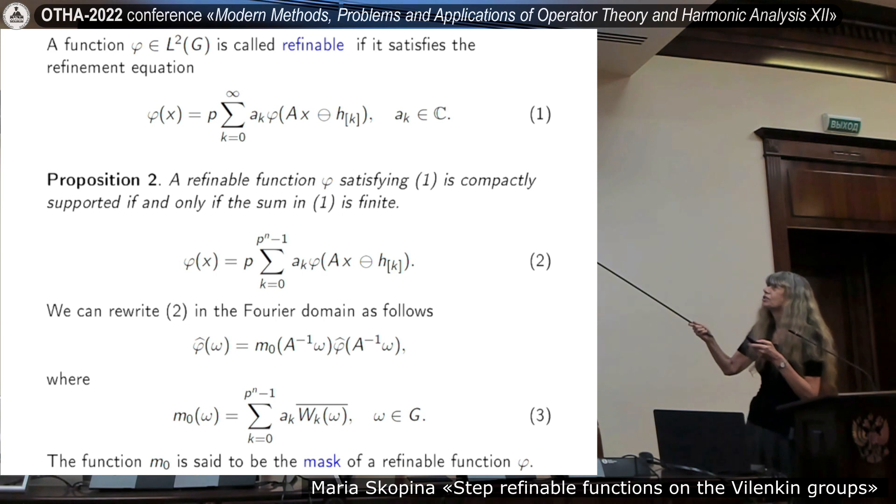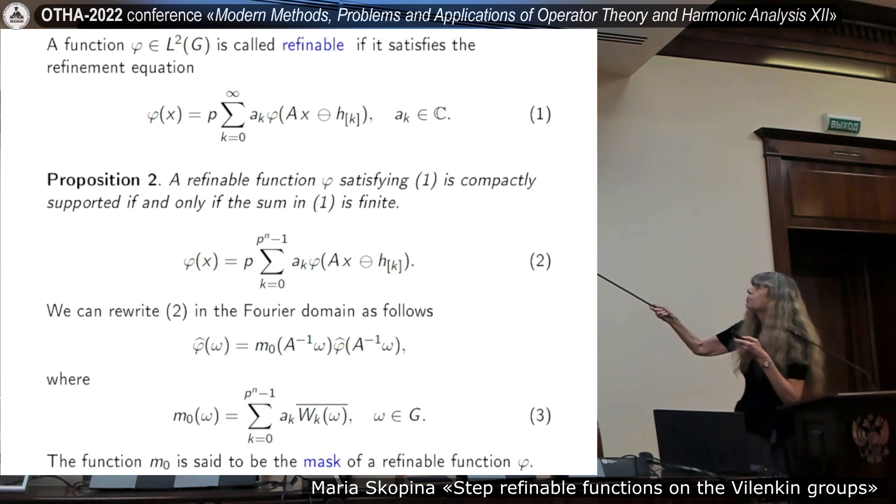Function is compactly supported and its Fourier transform is also compactly supported. So, it's possible to say that these classes are analogs of the Schwarz class. The best possible decay of Fourier transform and the best possible smoothness. A refinable function. What is refinable function? One is definition. Phi is represented as linear combination of what is written. Scaling and shift. Proposition. A refinable function phi satisfying one is compactly supported if and only if the sum in one is finite.